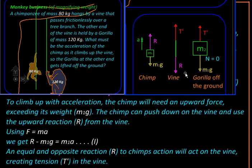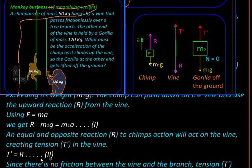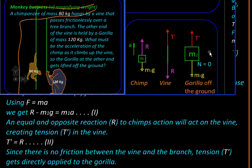Now let us consider the free body diagram of the vine. On the vine this action R from the chimp will cause a tension - let us call it T'. We can equate T', the tension in the vine, to be the action from the chimp. Because the vine is passing frictionlessly over the branch, this tension T' will be applied as it is to the gorilla.